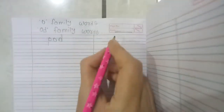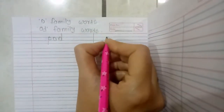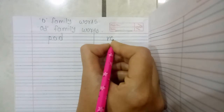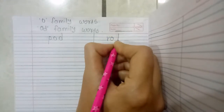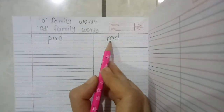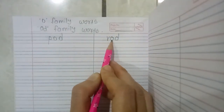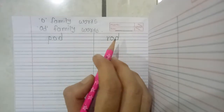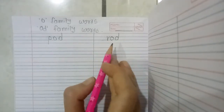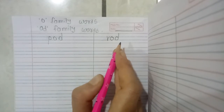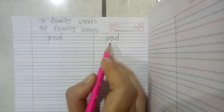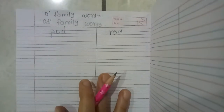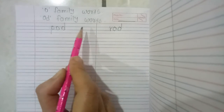And our next one is ROAD. How to write road? R-O-D. Road — yani chadi. Okay, yeh hua humara OD family words.